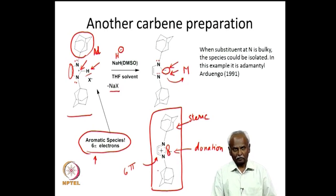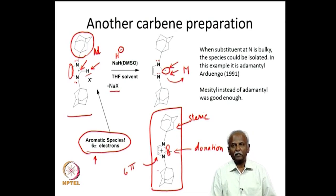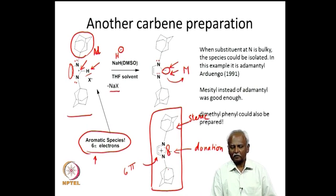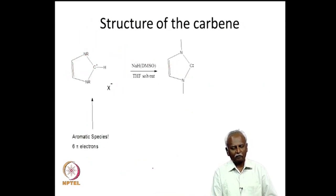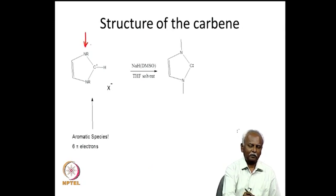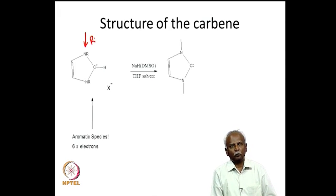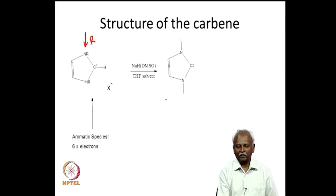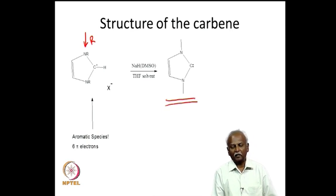Replacing the very bulky adamantyl group with a mesityl group also provides sufficient steric protection to stabilize this aromatic ring system. In fact, dimethylphenyl could also be used. A variety of R groups — dimethylphenyl, isopropyl, or tert-butyl — can be used to make the imidazolium cation, which can subsequently be deprotonated using sodium hydride or a base to generate the free and stable N-heterocyclic carbene.